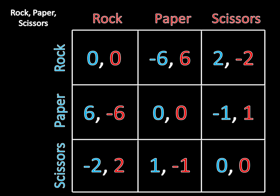First order of business is to discuss what a symmetric zero-sum game is. We've talked about what zero-sum is in the past, so let's quickly review that. A zero-sum game is a game in which if you add up the payoffs in every outcome, they sum to zero. So in the Rock Rock outcome, zero plus zero equals zero. In the Paper Rock outcome, six plus negative six equals zero. In Scissors Rock, negative two plus two equals zero. All of these things sum to zero.